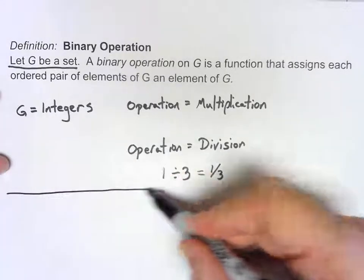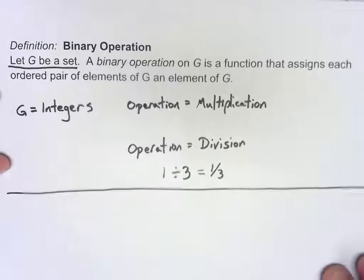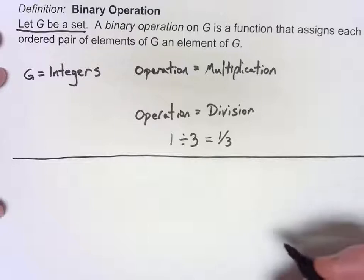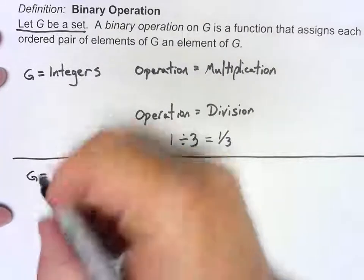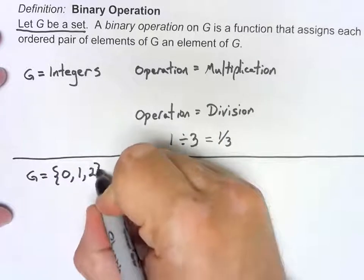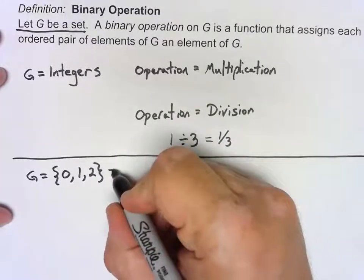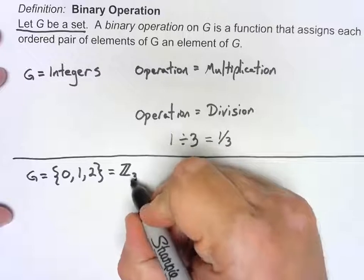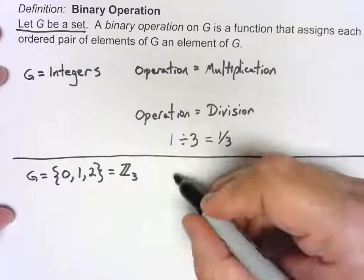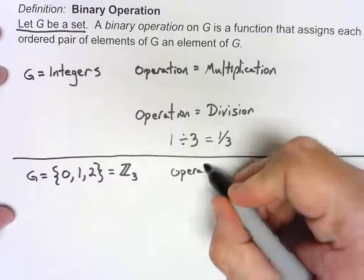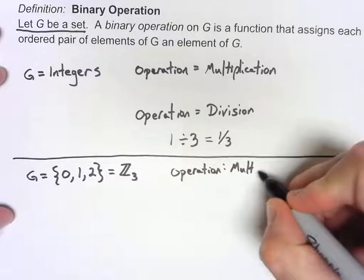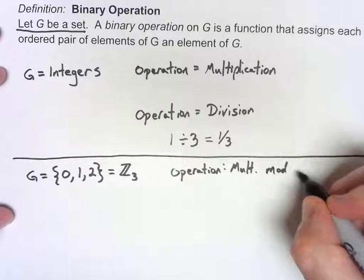Let's do one more example. I'm going to go ahead and take a look at my set G is the set that contains 0, 1, and 2. This set can be abbreviated as Z3. What my operation is is going to be multiplication, but I'm going to mod it by 3.